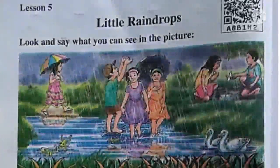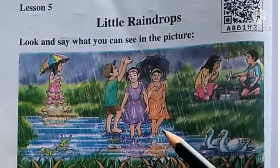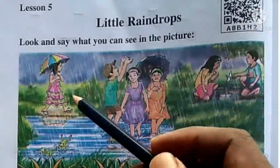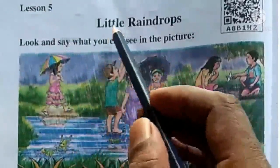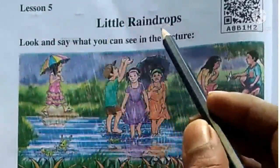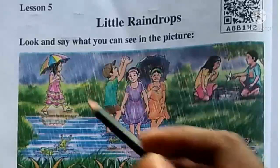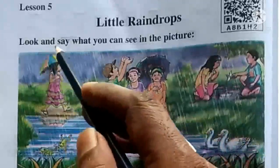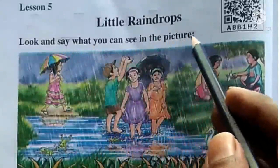Good morning, Class 3. Welcome to our English class. Today we have Pass number Lesson 3: Little Raindrops, Part 2. Let's start Part 2. Look and say — what you can see in the picture.